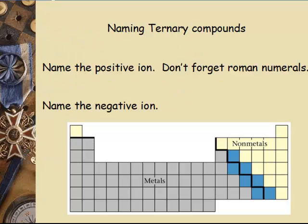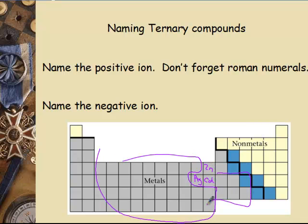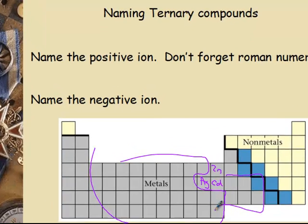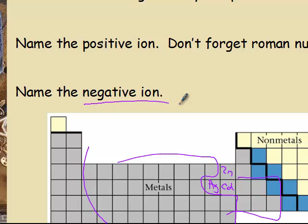Now, what happens if you don't have binary but have ternary compounds? You do the same thing — name the positive ion, don't forget Roman numerals for transition metals with the exception of zinc, cadmium, and silver. Then for the negative ion, it's a little easier: you don't change anything when naming ternary compounds. You need your polyatomic ion list and you simply look it up.